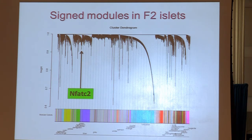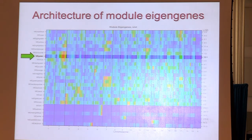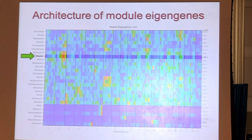We calculated signed modules — this is the scruffy feature that Peter talked about yesterday. We have a green module that actually contains NFATC2. When we take the module eigengenes and highlight just the green one, the module eigengene green maps to chromosome 2. So now we have a handle on this from a module standpoint. I'll come back to this later if we have time to discuss other aspects of this architectural analysis.